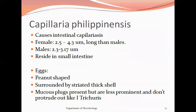Capillaria philippinensis is a nematode that causes intestinal capillariasis. The female is 2.5 to 4.3 mm in length, longer than the male, which is 2.3 to 3.17 mm. They reside in the small intestine. The eggs are peanut-shaped, similar to Trichuris trichura eggs, and are surrounded by a striated thick shell with mucus plugs that are less prominent and do not protrude as much as in Trichuris trichura.